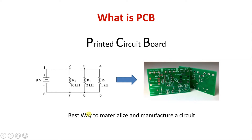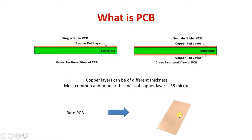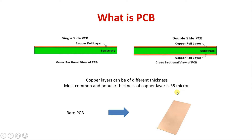The printed circuit board is the best way to materialize and manufacture a circuit. What is the printed circuit board made up of? It is made up of a substrate onto which a thin copper layer is deposited all around. You can see this is a sample board onto which the copper is completely deposited — this is called a bare PCB. There can be a single-sided PCB with copper on one layer or a double-sided PCB with copper on both layers. Copper layers can be of different thicknesses, but the most popular and common thickness used in industry is 35 microns.